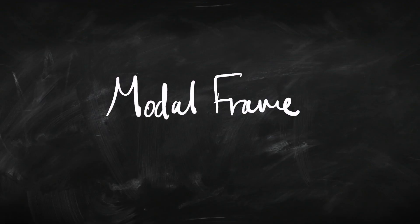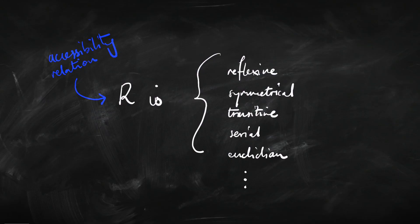One of the key concepts we're going to be talking about is a modal frame. So what is a modal frame? It's where the accessibility relation in a model has a certain property, or it's got a certain condition put on it. We've already seen some of those conditions — things like the relation being reflexive, or being symmetrical, or being transitive.